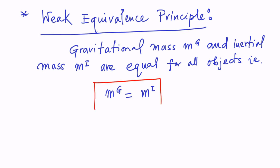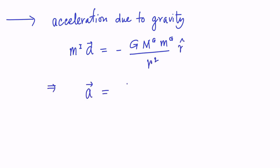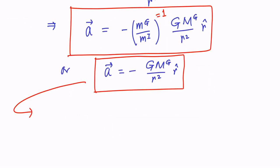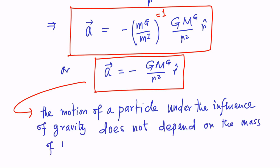This is an axiom — we assume it is true, and experiment tells us they are very close to each other. Now let us revisit the acceleration due to gravity. We can write Newton's second law under the influence of gravitational force, and express the resultant acceleration a as minus (m^g / m^i) times G times M^g over r-squared times r-cap. Importantly, applying the weak equivalence principle, this implies that the motion of a particle under the influence of gravity does not depend on the mass of the particle.